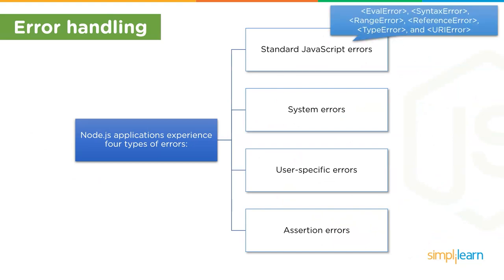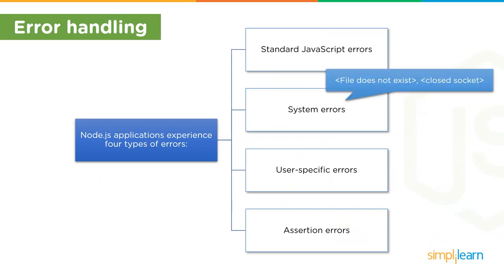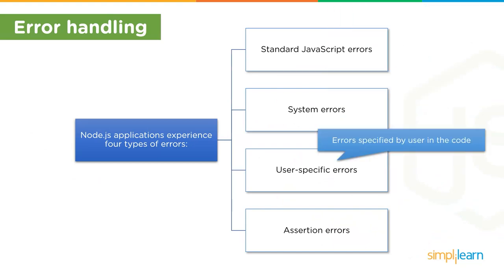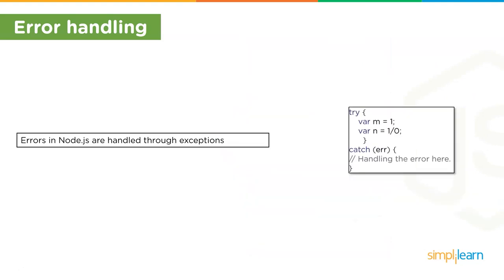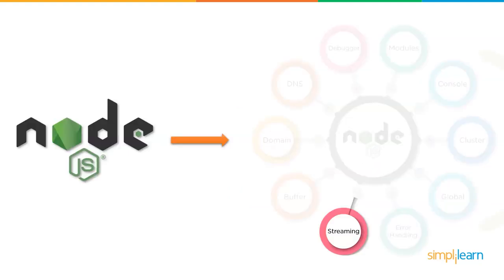The next component is error handling. Node.js applications experience four types of errors: standard JavaScript errors, system errors, user-specific errors, and assertion errors. Errors in Node.js are handled through exceptions. For example, when dividing a number by zero, this would crash the application, so we need to handle this error — as shown in the code example.